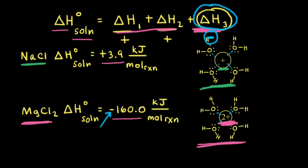Therefore, the dissolution of magnesium chloride is an exothermic process. For sodium chloride, when the sodium cation is hydrated, not as much energy is released. Therefore, the overall delta H-naught of solution is positive, and the dissolution of sodium chloride is an endothermic process.